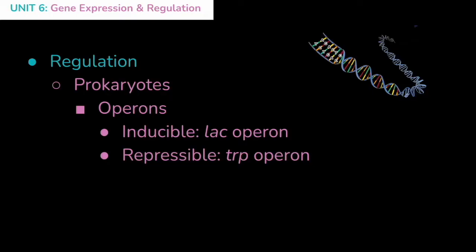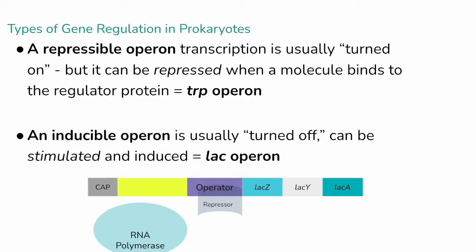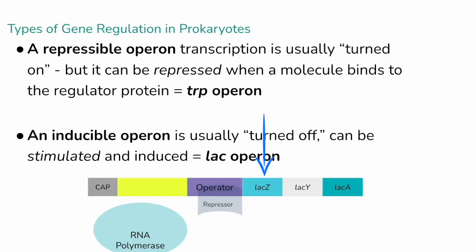Inducible operons are ones that you can turn on, and repressible operons are groups of genes that you can turn off. When we say turned on and off, what we mean is transcription — the action of RNA polymerase transcribing genes, or sections of DNA, into mRNA that will later be translated into proteins.